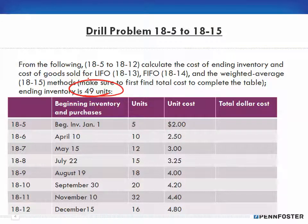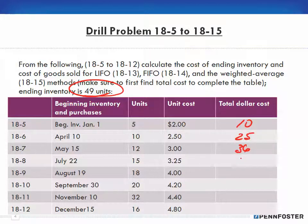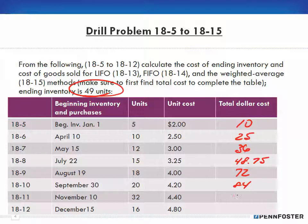We're doing the math across the table. For beginning inventory: 5 × $2.00 = $10.00; 10 × $2.50 = $25.00; 12 × $3.00 = $36.00; 15 × $3.25 = $48.75; 18 × $4.00 = $72.00; 20 × $4.20 = $84.00; 32 × $4.40 = $140.80; and 16 × $4.80 = $76.80.